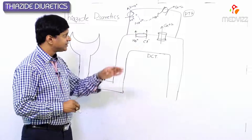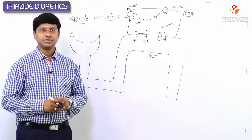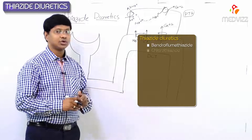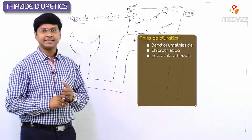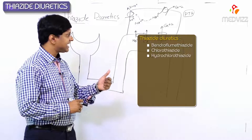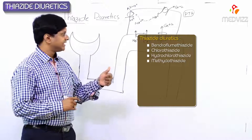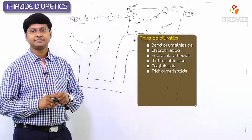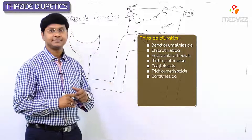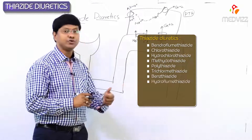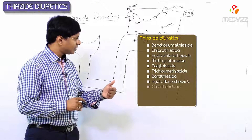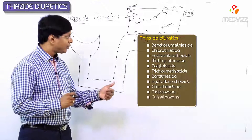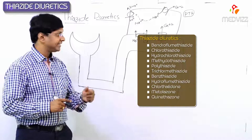The drugs in this group include bendroflumethiazide, chlorothiazide, hydrochlorothiazide, methyclothiazide, polythiazide, trichlormethiazide, benzothiazide, hydroflumethiazide, chlorthalidone, metolazone, quinethazone, and indapamide.